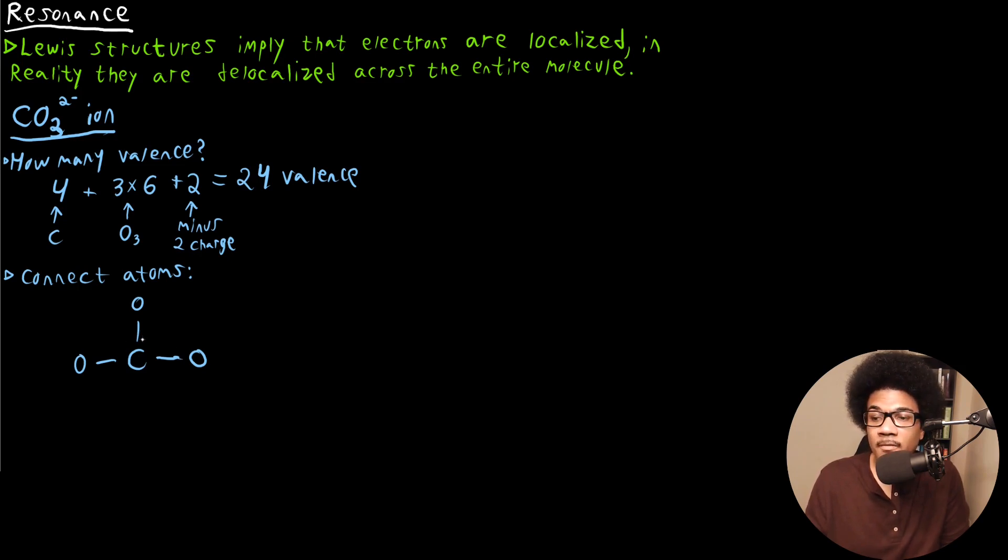Now we can fill carbon's octet by forming a double bond with one of these oxygens and then complete the Lewis structure by just filling in the lone pairs for all of the oxygens. And then, like I said, for ions, I like to put this parentheses and minus two charge to indicate that we have a negative two charge on the total molecule. So that's a valid Lewis structure there, but it's actually not the only valid Lewis structure.